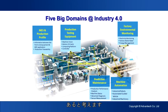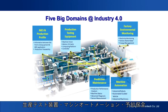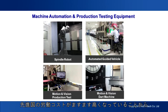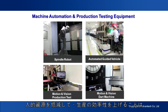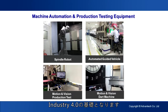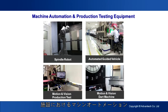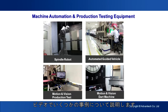We think there are five domains in a smart factory to fulfill these objectives: MES production, testing equipment, machine automation, predictive maintenance, and factory environmental monitoring. Due to increasing labor costs in developed countries, decreasing human resources and improving production efficiency is the foundation of Industry 4.0. The solution is to increase the capability of machine automation and production testing equipment in the facility.